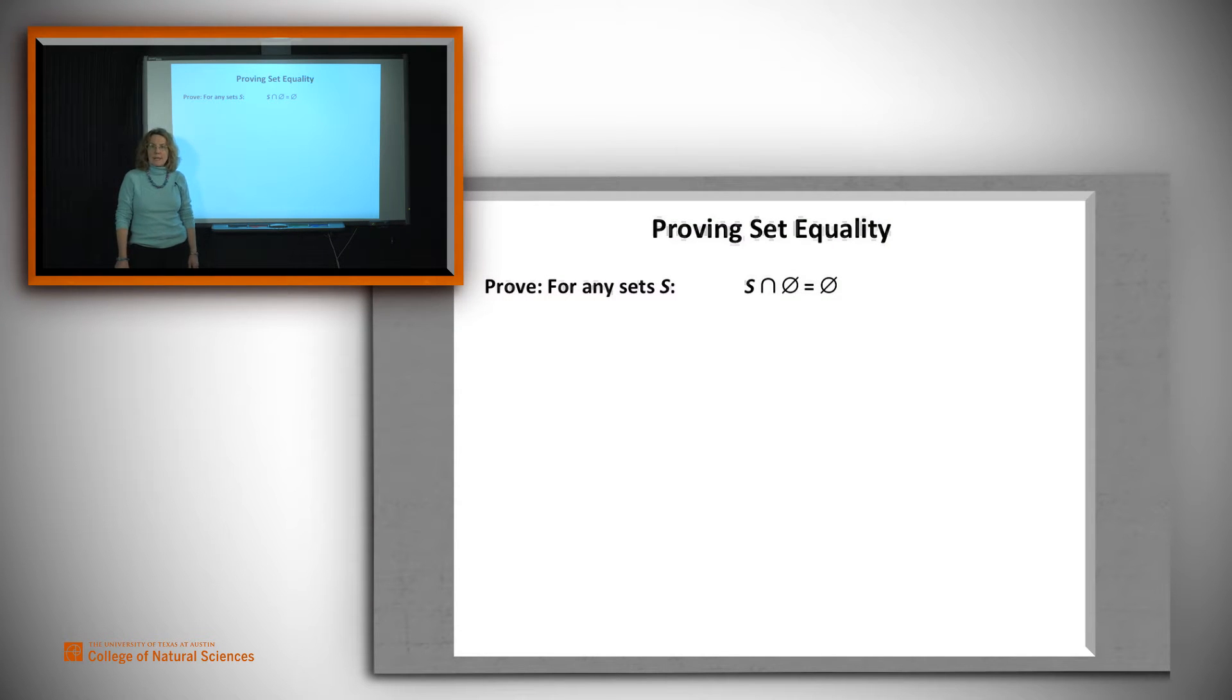Suppose we want to prove a set claim, like for example, this useful identity. For any set S, S intersect the empty set is the empty set. How do we go about proving that these two sets are the same?